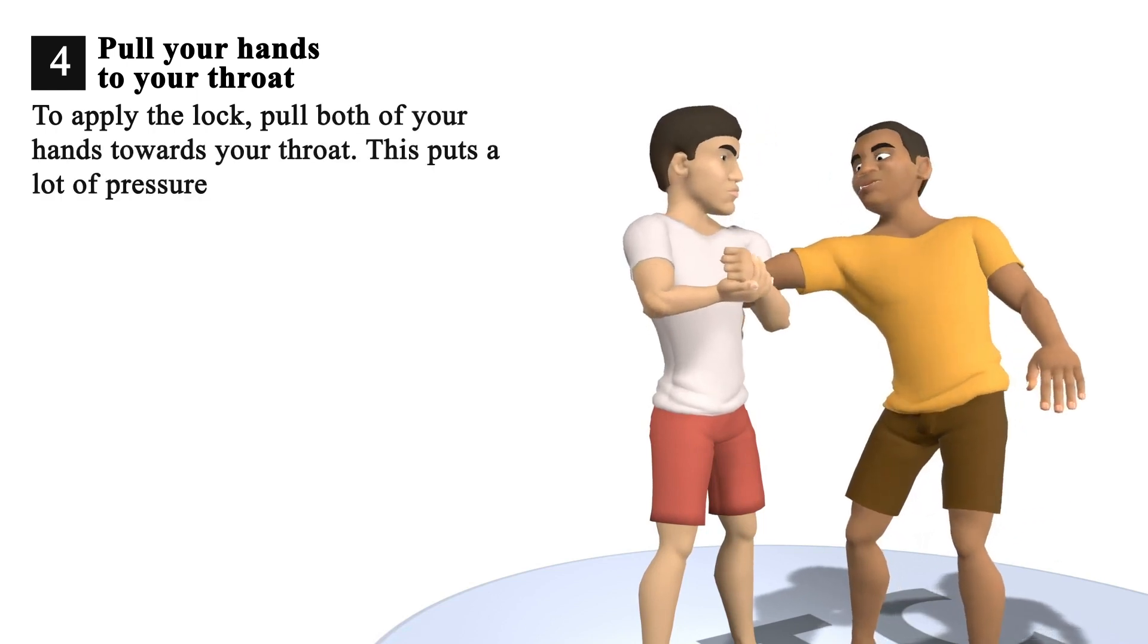This puts a lot of pressure on the opponent's shoulder. It naturally rises on its toes and deviates to relieve unbearable pain.